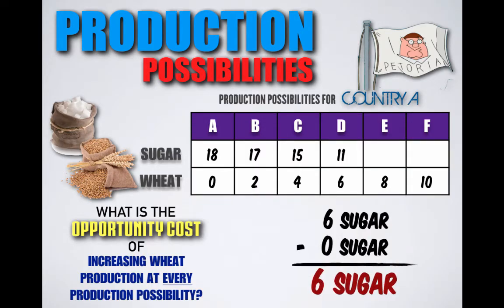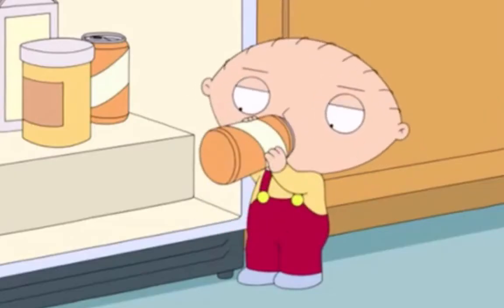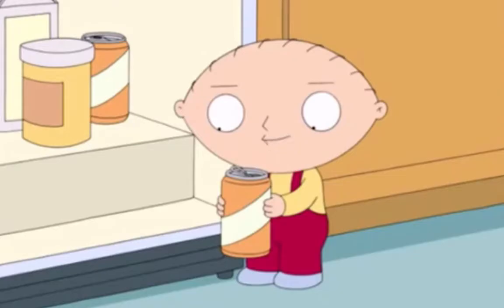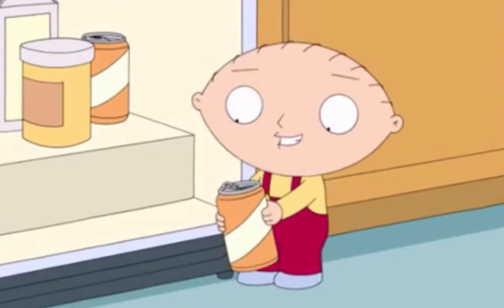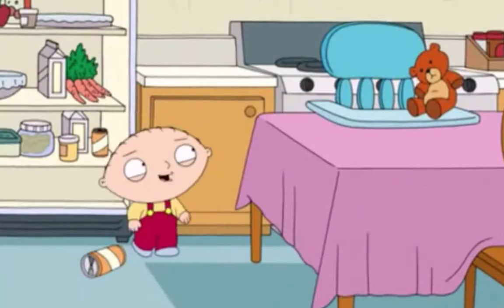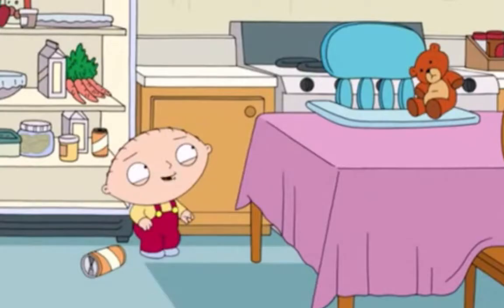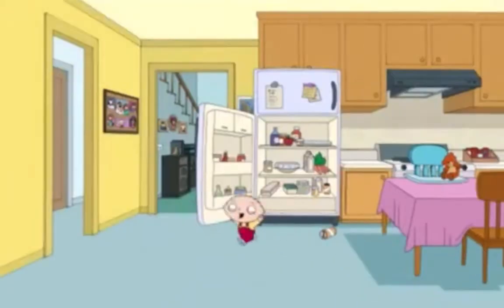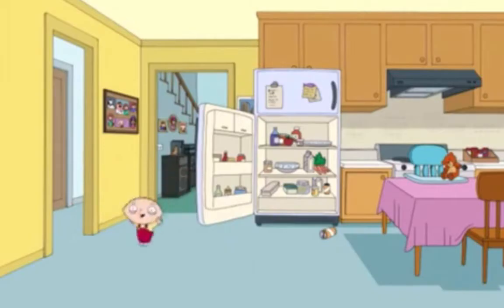You can see that as Petoria increases its wheat production every time it changes from one combination to another, it gives up the ability to produce sugar. You only have so many resources available to you, and so in order to gain wheat, Petoria must give up sugar. If gaining more wheat is incredibly important to Petoria's social needs or goals, then this decision is a good one, and losing that sugar would be worth it.